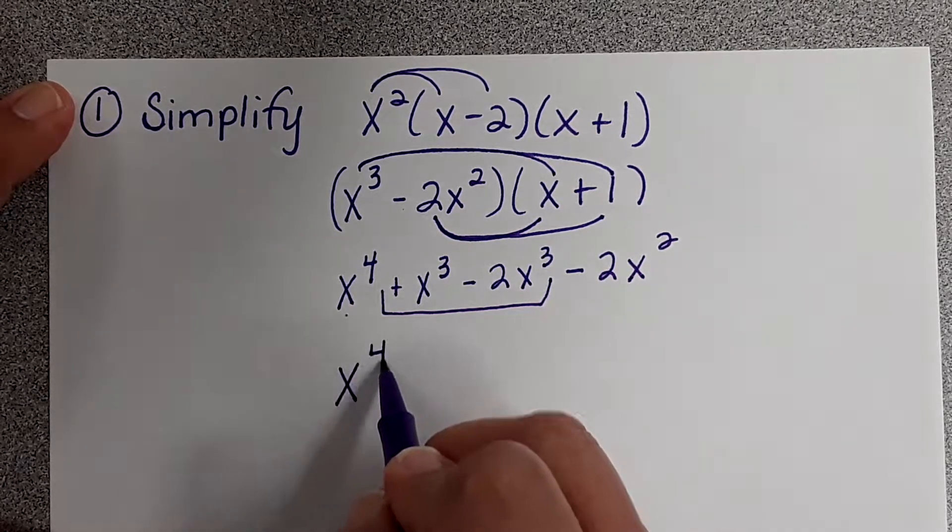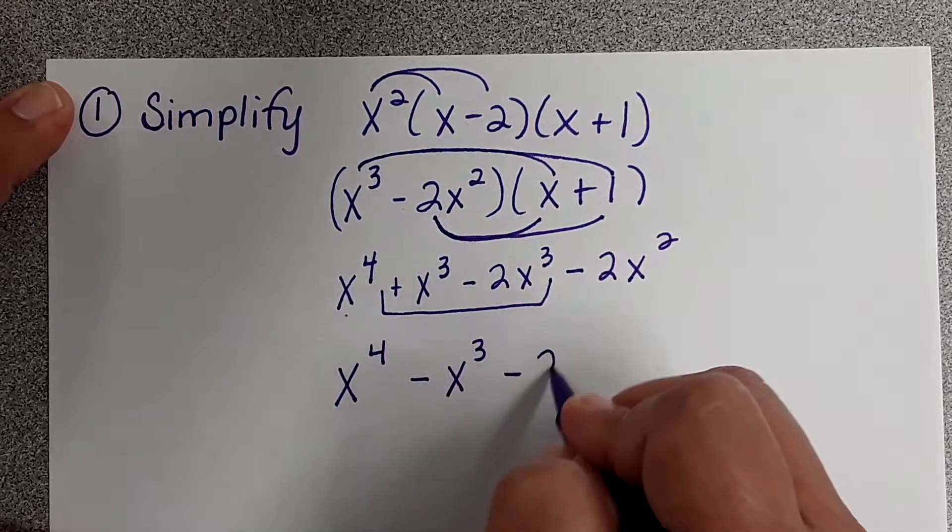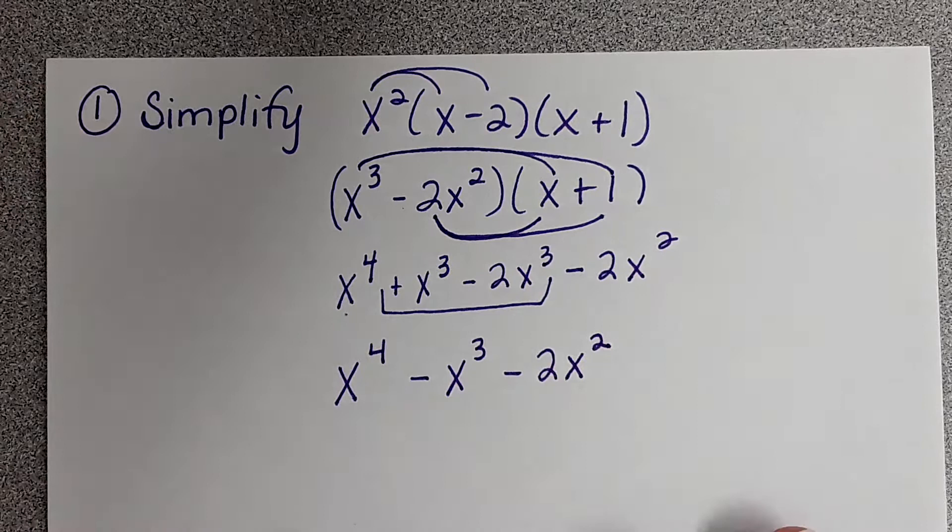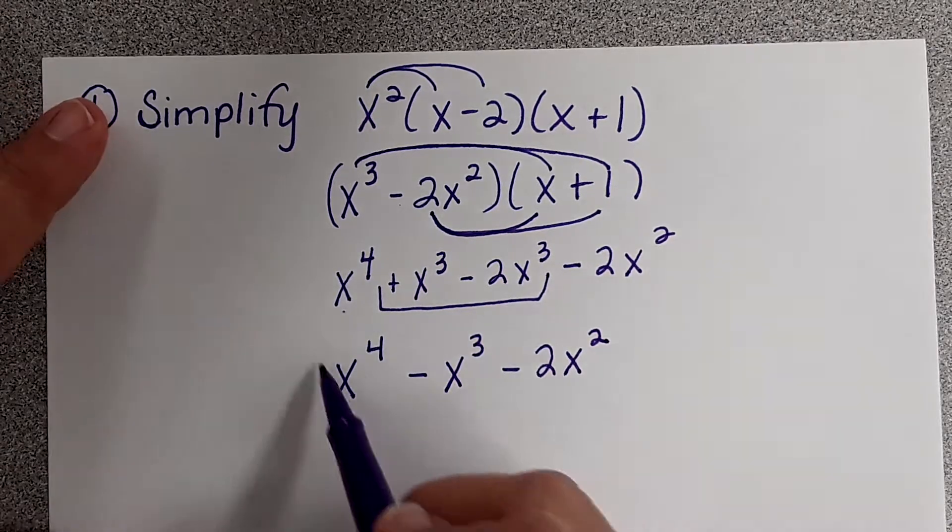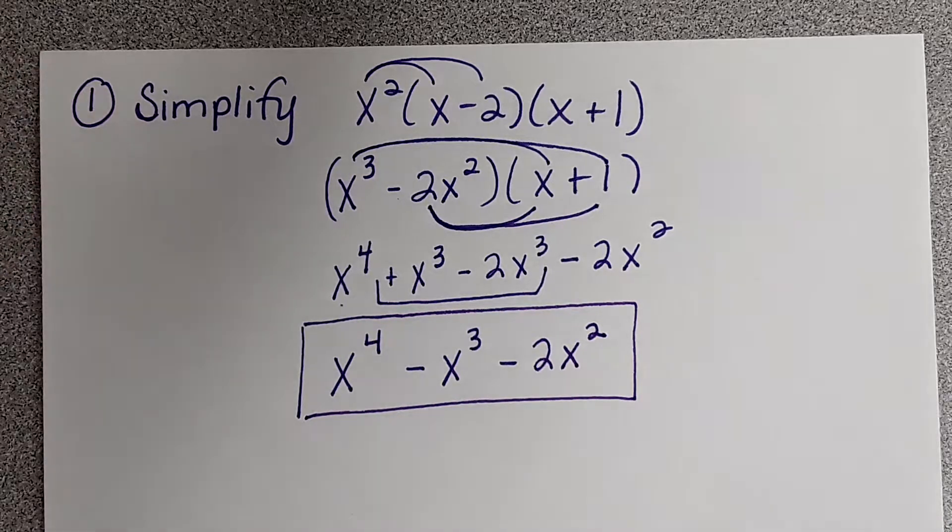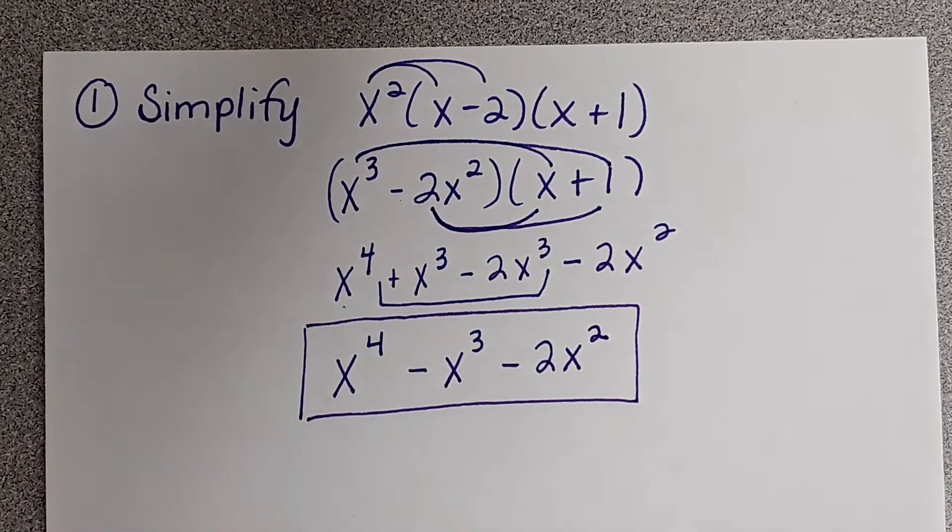So my final answer is x to the fourth minus x to the third minus 2x squared, and then that's your answer. How'd you guys do? Did you do good, or are you thinking you made that look too simple?